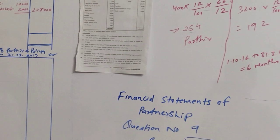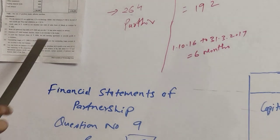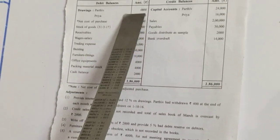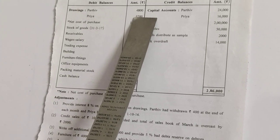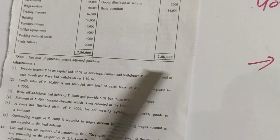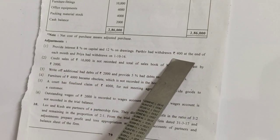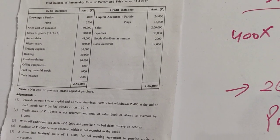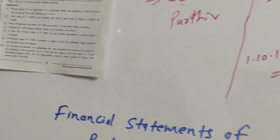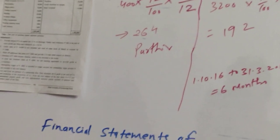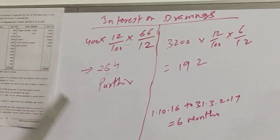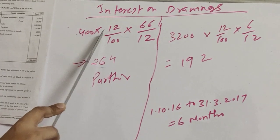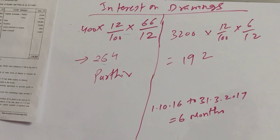Now let us talk about drawings, where 12% interest is to be calculated. Parthiv had withdrawn Rs.400 at the end of each month. The total drawing of Parthiv is Rs.4,800 — that is 400 into 12. From the first chapter, we learned that if a drawing is made at the end of every month, the formula is: amount of monthly drawing × rate of interest on drawings × 6/12. So: 400 × 12/100 × 6/12 months, which gives Rs.264. The interest on drawing of Parthiv is Rs.264.